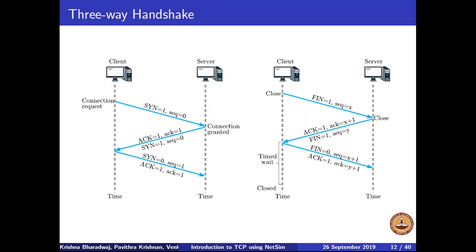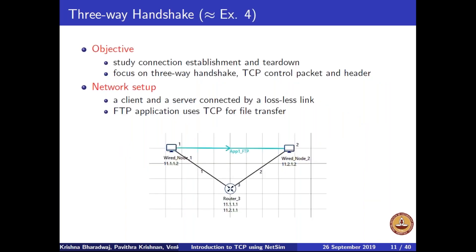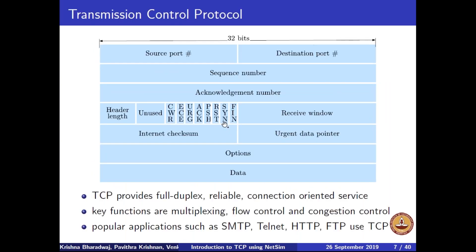Here is roughly how TCP performs connection establishment and tear-down. Looking at the figure on the left: when the client initiates a connection, it sends a TCP packet to the server with the header field SYN carrying the value one. In the TCP header, there are one-bit fields: SYN, FIN, and ACK, as well as the sequence number and acknowledgement number fields. Please note these fields — SYN, FIN, and ACK — along with the sequence number and acknowledgement number, as they are key to understanding connection establishment.